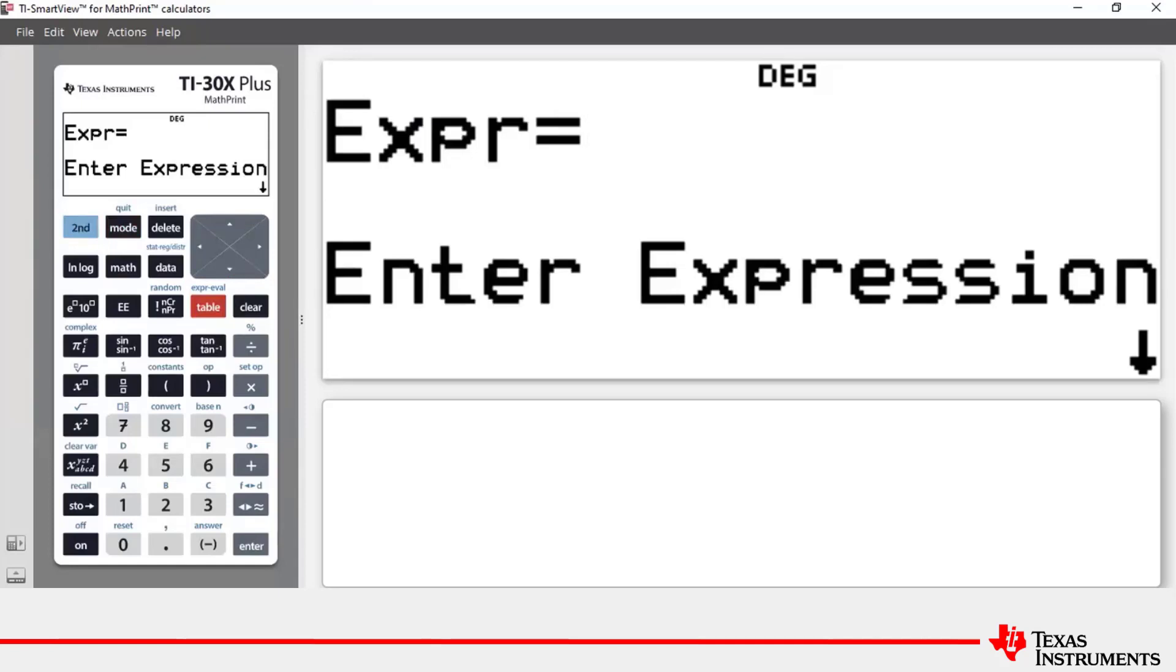The expression that we're going to enter comes from geometry. The example that we're going to look at is finding the total surface area or TSA of a cuboid with dimensions eight centimeters by six centimeters by five centimeters.